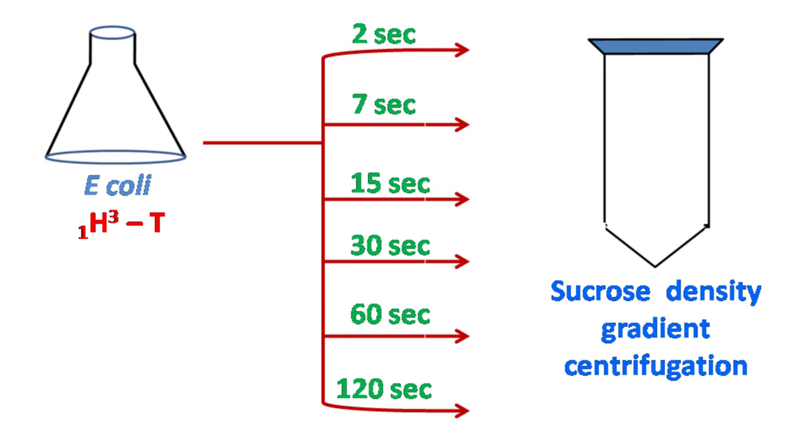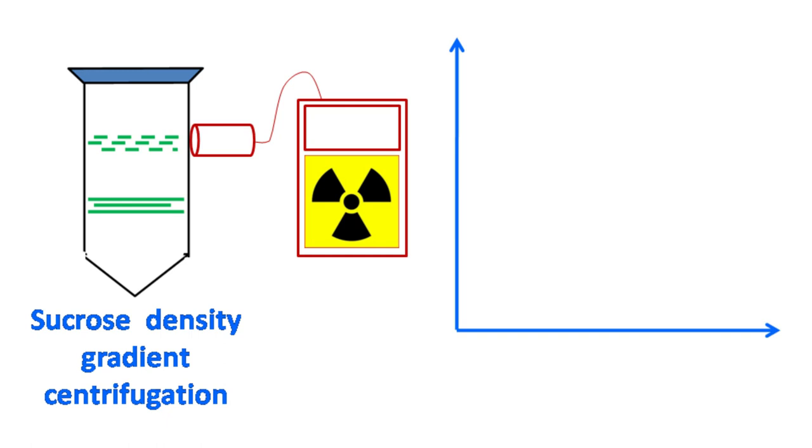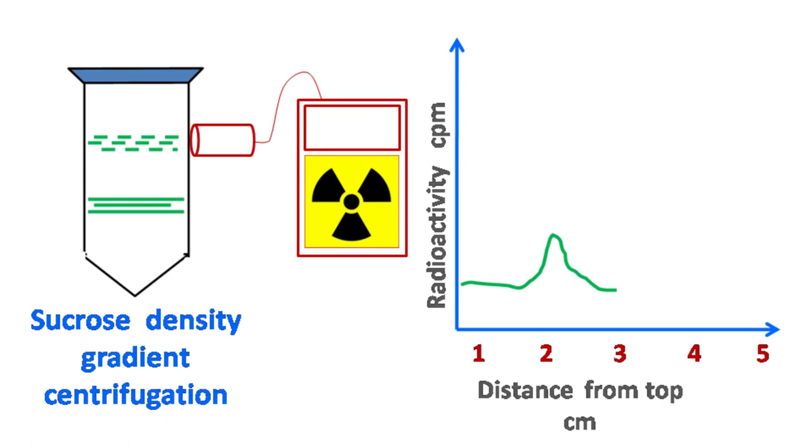After centrifugation, radioactivity was checked from top to the bottom of the tube. The radioactivity on the top will indicate the presence of small DNA fragments or the lagging strand, while that on the bottom will indicate the presence of leading strand.